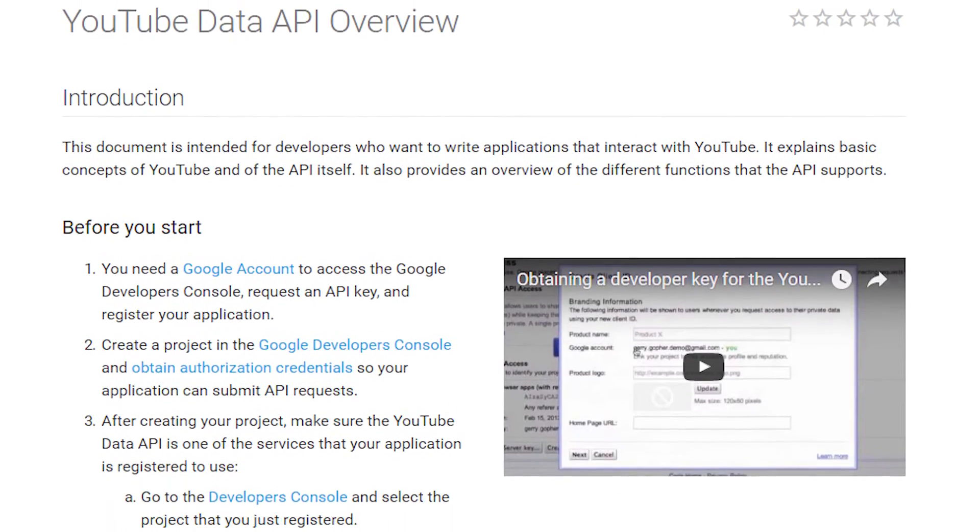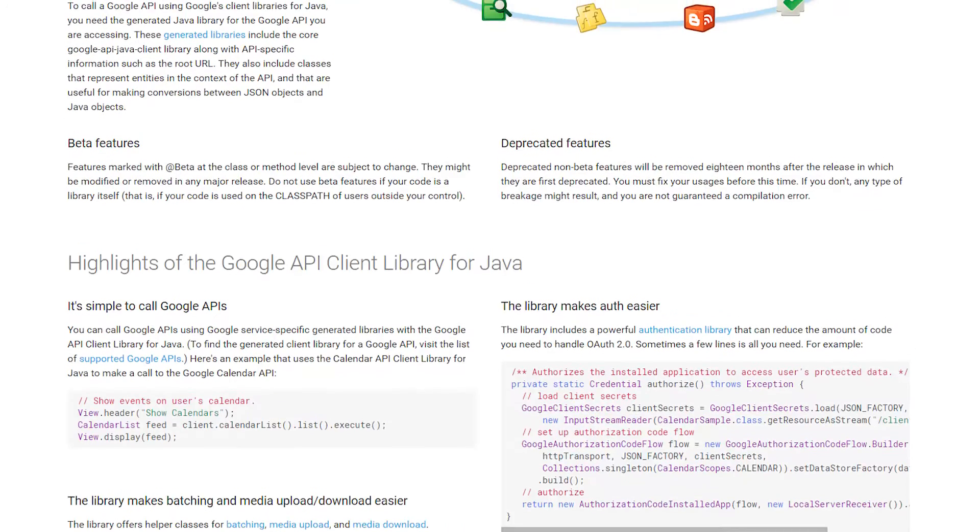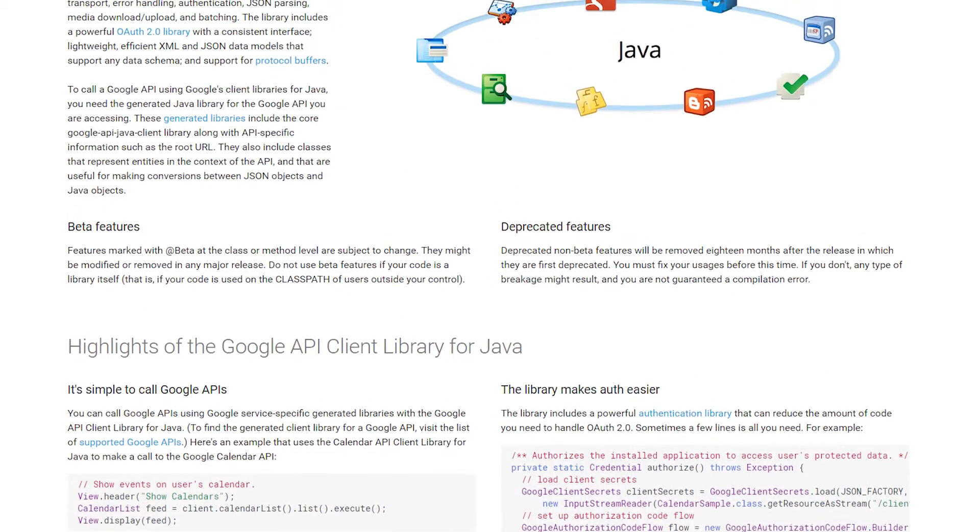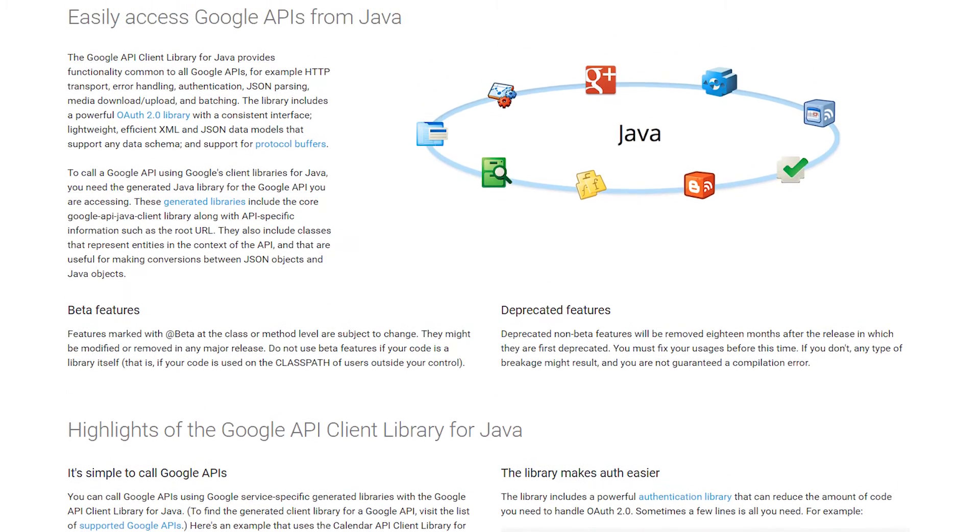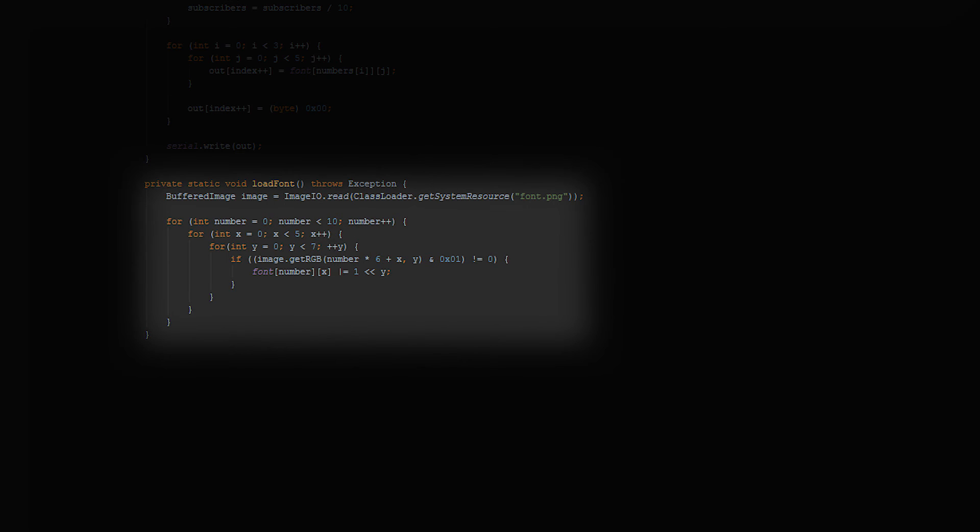Now that I know everything's working, I can hook into the YouTube API to get my channel subscription count. YouTube provides Java bindings for their API, which makes it really easy to get something working quickly. I made a 5x7 font in Photoshop that I saved as a PNG. This is loaded by the application for drawing numbers.